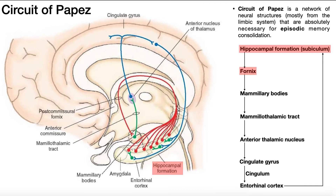Now we're going to go over the structure of the Circuit of Papez. It is just that — a circuit — meaning it's going to start in the same place that it ends. It's going to begin in the hippocampus at the hippocampal formation, loop around, and then end in the hippocampal formation. The hippocampal formation specifically is where long-term memory consolidation occurs. All the other structures it passes through are thought to be involved in the assignment of emotional significance to that memory.